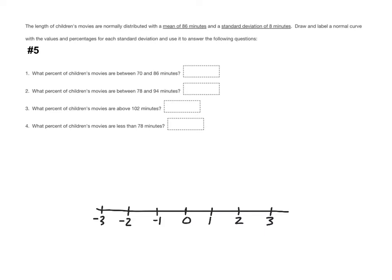Let's go ahead and put our numbers in. The mean is 86 minutes, so 86 goes right in the middle. The standard deviation is 8, so to get the next value we do 86 plus 8, which is 94. Then 94 plus 8 is 102, and 102 plus 8 is 110. To get the standard deviations below the mean, you subtract 8. So 86 minus 8 is 78, 78 minus 8 is 70, and 70 minus 8 is 62. Those are the values we need on our number line.